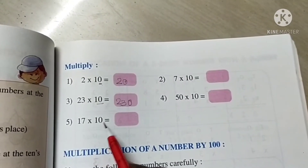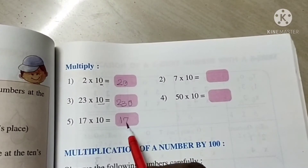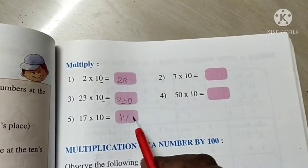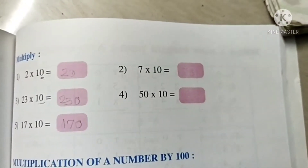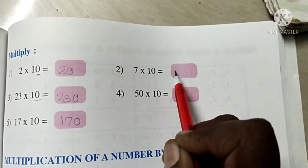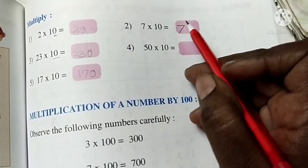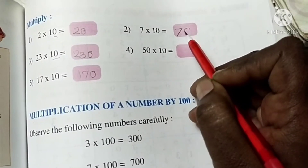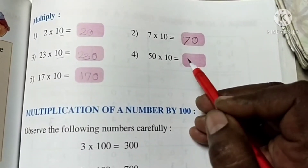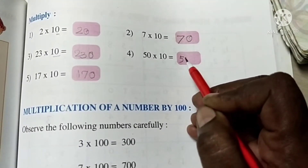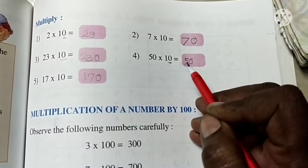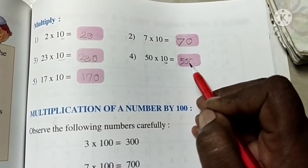Seventeen multiplied by ten — first write the number seventeen, then place one zero to the right of the number. Seven multiplied by ten — write the number seven. Fifty multiplied by ten — write fifty, then place one zero to the right of the number. Five hundred.